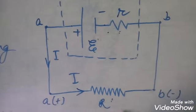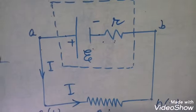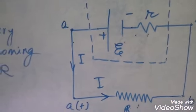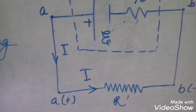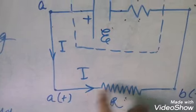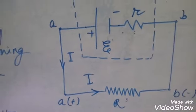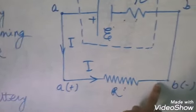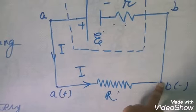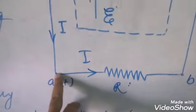Now let us come to terminal potential difference. If the potential at point A is Va and the potential at point B is VB, the terminal potential difference is Va minus VB. This potential difference is applied across the resistor R, which results in the current I.